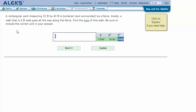Here's an example problem: A rectangular yard measuring 31 feet by 43 feet is bordered and surrounded by a fence. Inside, a walk that is two feet wide goes all the way along the fence. Find the area of this walk. Be sure to include the correct unit in your answer. Let's click explain.